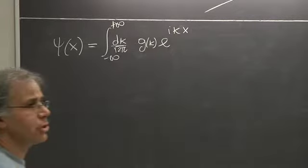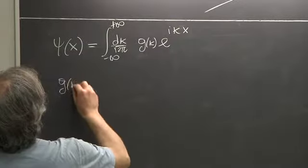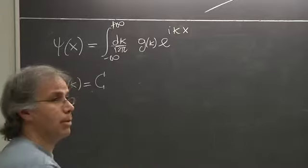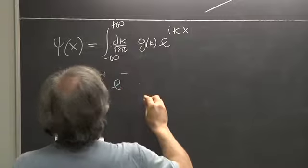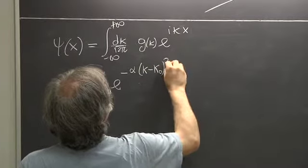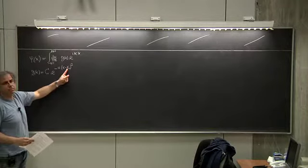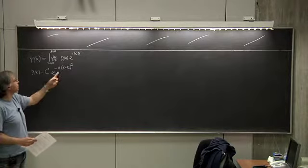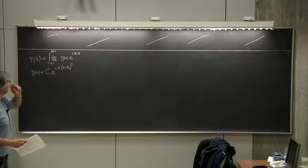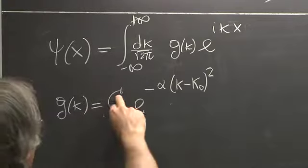To proceed with the calculation we will make a choice for g of k and select it to be a Gaussian: some normalization constant C, times e to the minus alpha times k minus k0 squared. So it's a Gaussian centered around some wave vector k0, with a width that depends on alpha — in fact inversely proportional to alpha. We have to learn how to calculate this.